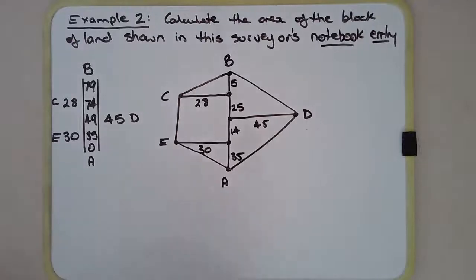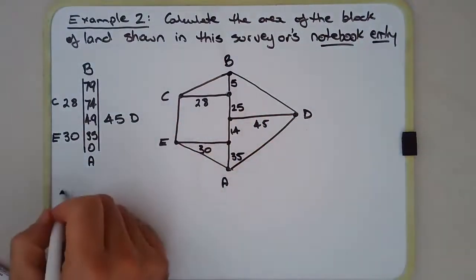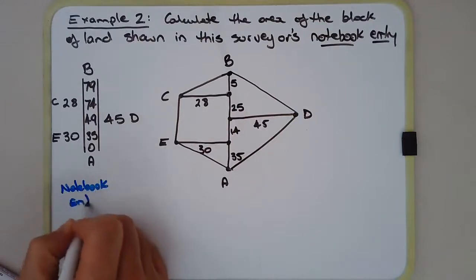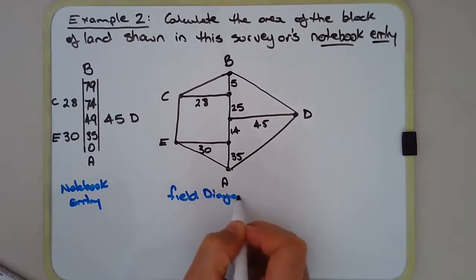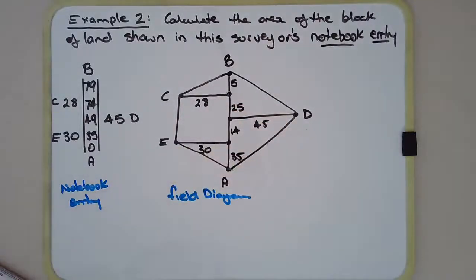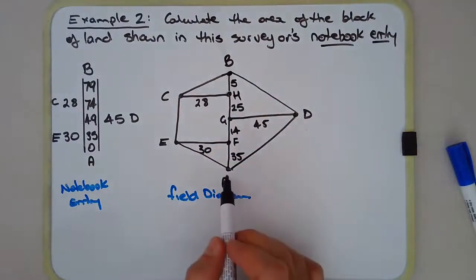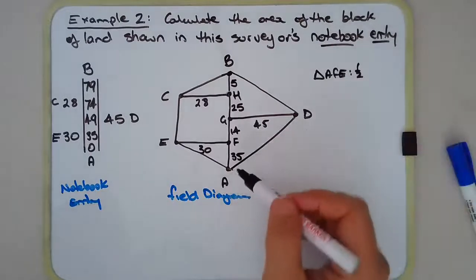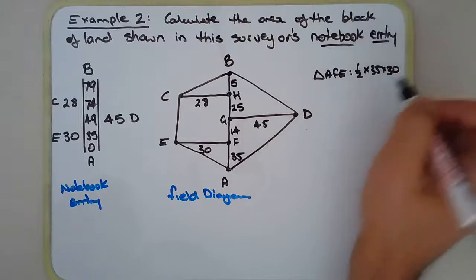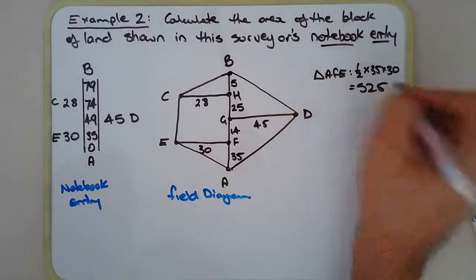Now, the final step now is to find the area of this field diagram. Or the block of land represented by this field diagram. So this is our notebook entry. And it has now become a field diagram. That's our traverse line. There are the offsets. So let's work this out. I'm just going to add some more vertices here. So let's call that F, G, and H. So A, F, E. So triangle A, F, E. Half base times height. So half times 35 times 30. Half times 35 times 30 is 525. So that's that one done.